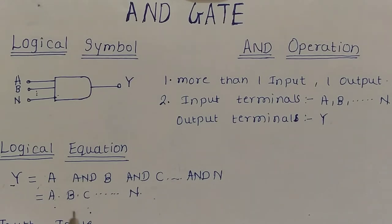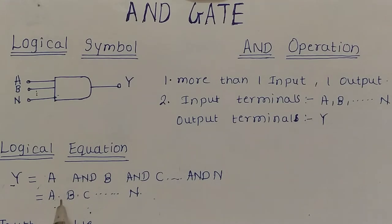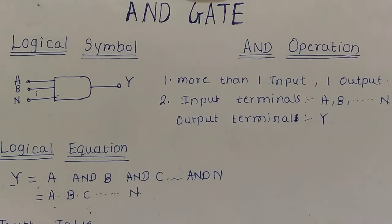The equation Y = A·B·C...·N is known as the Boolean equation or the logical equation of the AND gate.